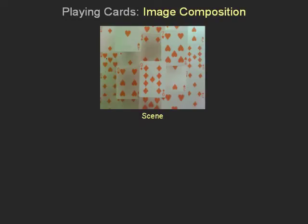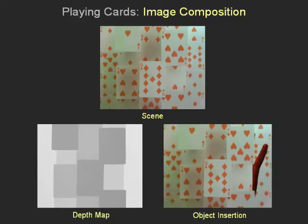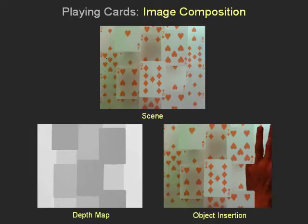Here we see playing cards located at four different depths in the scene. It is very hard to automatically or even manually segment the cards in this scene. The computed depth map gives us a clean, depth-based segmentation of the scene. Using the depth map, we can now insert a moving hand from another video clip with all the desired occlusion effects.